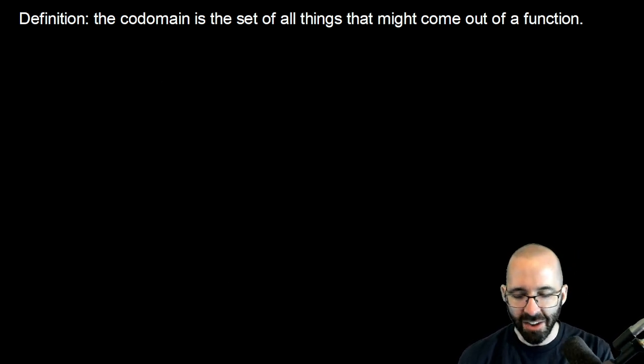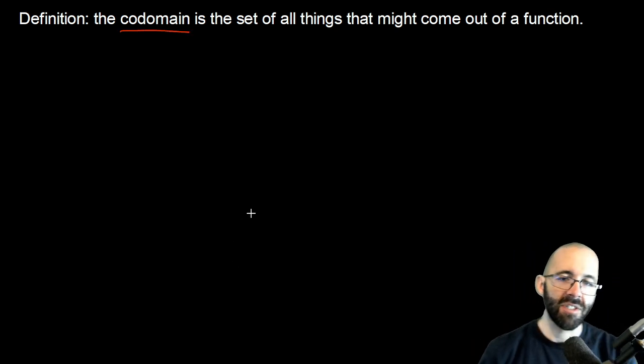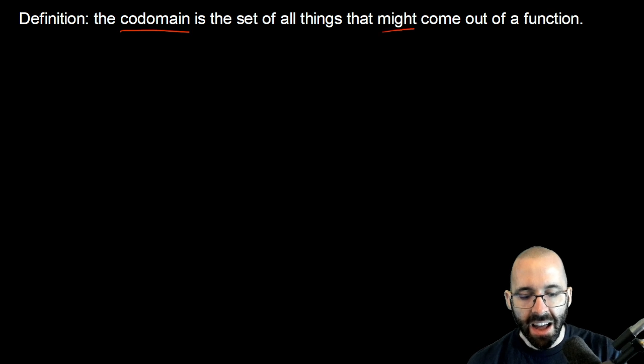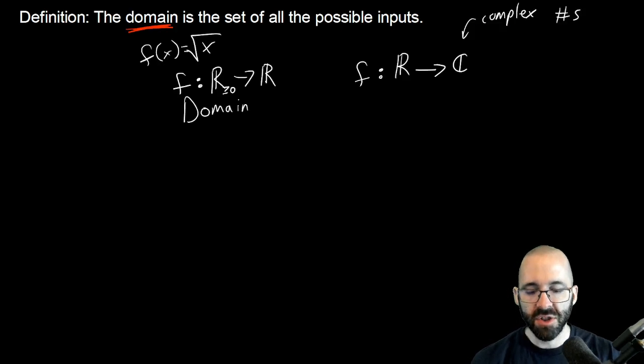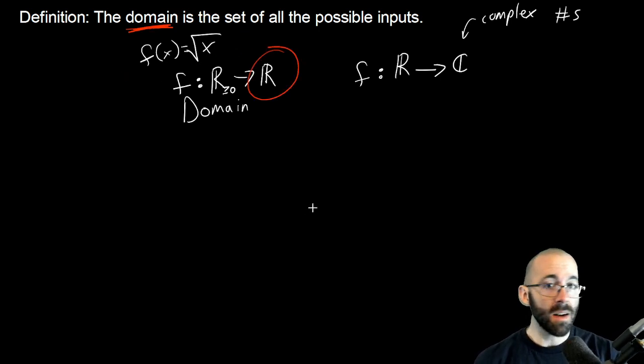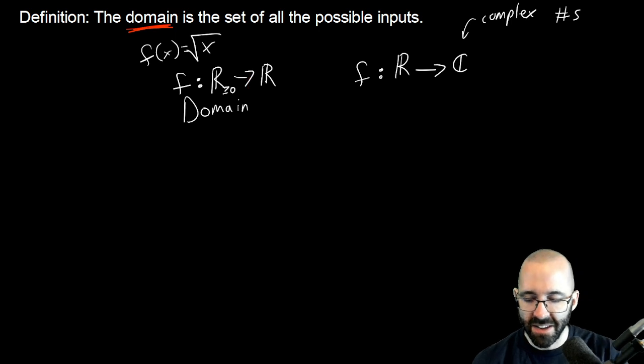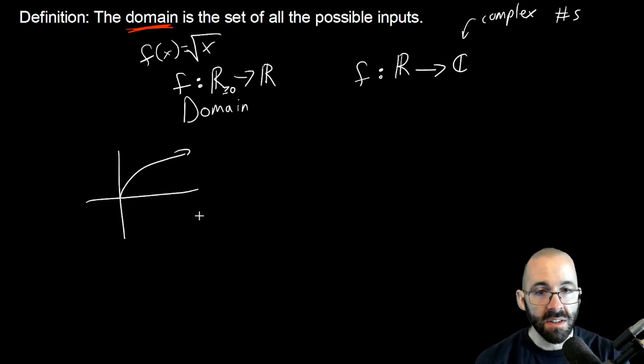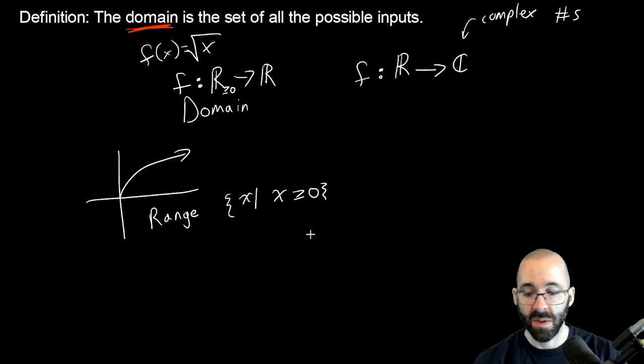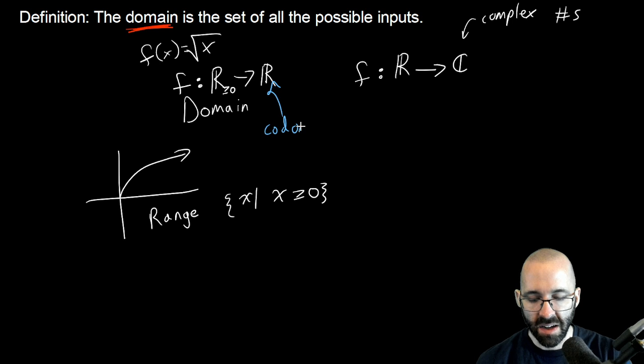The codomain. You might have been thinking of another word, I won't say the other word yet. This is a word you may have not heard before. The codomain is all the things that might come out of a function. Let's think about square root. The codomain is all real numbers - that's not a mistake.